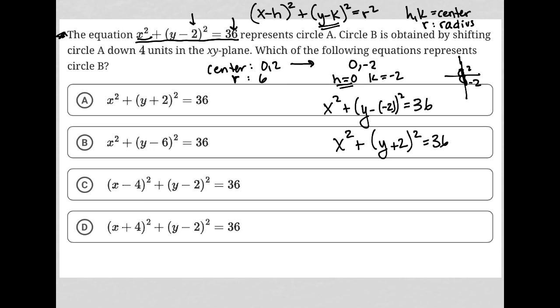And let's find that answer. It is choice A, x squared plus y plus 2 squared equals 36. The exact same thing that we came up with there.